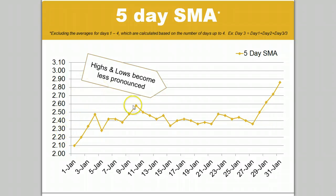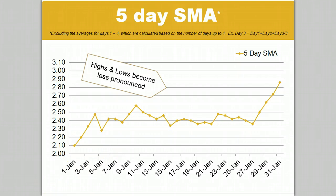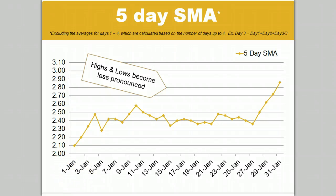If we graph the SMA for January, we see that the dynamic highs and lows become less pronounced. Now, the 5-day SMA for January shown in this graph obviously doesn't apply to January 1st through 4th, because we don't have 5 days of data to average. So those days are a moving average based on the number of days worth of data available. For instance, day 3 would be day 1 plus day 2 plus day 3, divided by 3.